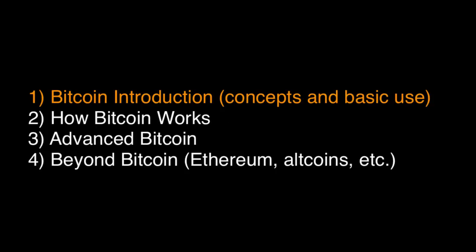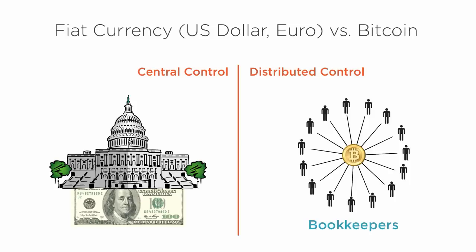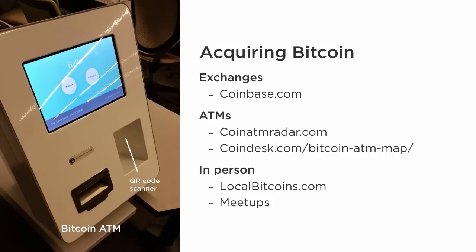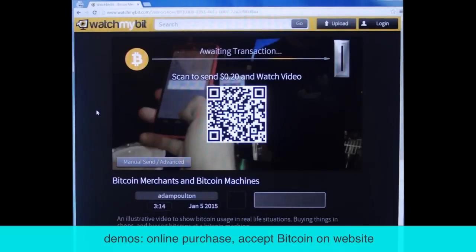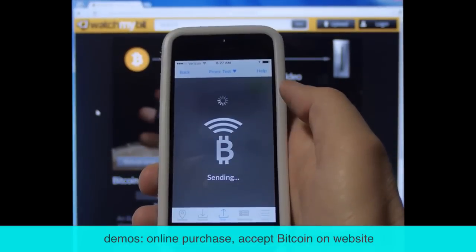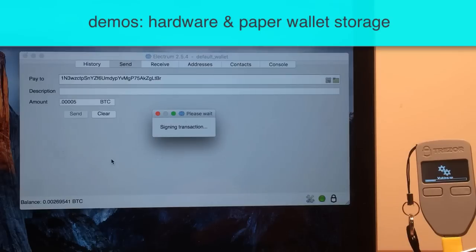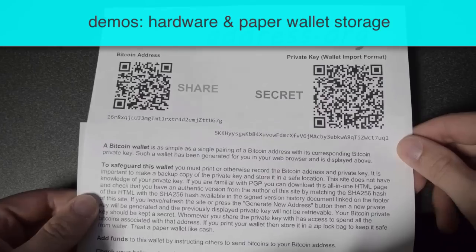The first module is designed to get beginners up to speed on both the concepts and basic use of Bitcoin. It begins with the big ideas behind Bitcoin, like privacy, openness, and programmability, and attempts to explain why Bitcoins have value. It then follows with several demos showing how to use Bitcoin, starting with how to get it from exchanges, in person, to ATMs, to how to spend it on a website with a mobile phone, accept it on your own website as payment, and finally how to securely store it in a hardware wallet or in cold storage with a paper wallet.